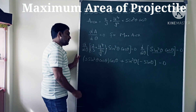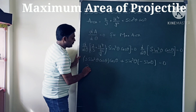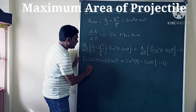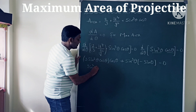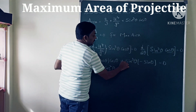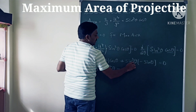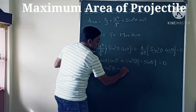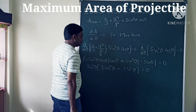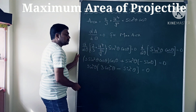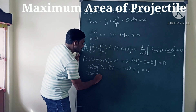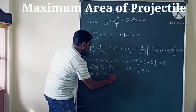Simplifying this equation, we see that sin²θ is common in both terms. Factoring it out gives: sin²θ × (3cos²θ − sin²θ) = 0. Since sin²θ ≠ 0, dividing both sides by sin²θ gives: 3cos²θ − sin²θ = 0.